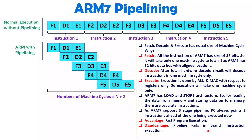If a branch is coming, then you will have to discard the redundant data. For example, if instruction 2 is having a branch, then fetch three, decode three, and fetch four — this data should get discarded. So when a branch is coming, at that time you will have to remove this data as it becomes invalid.